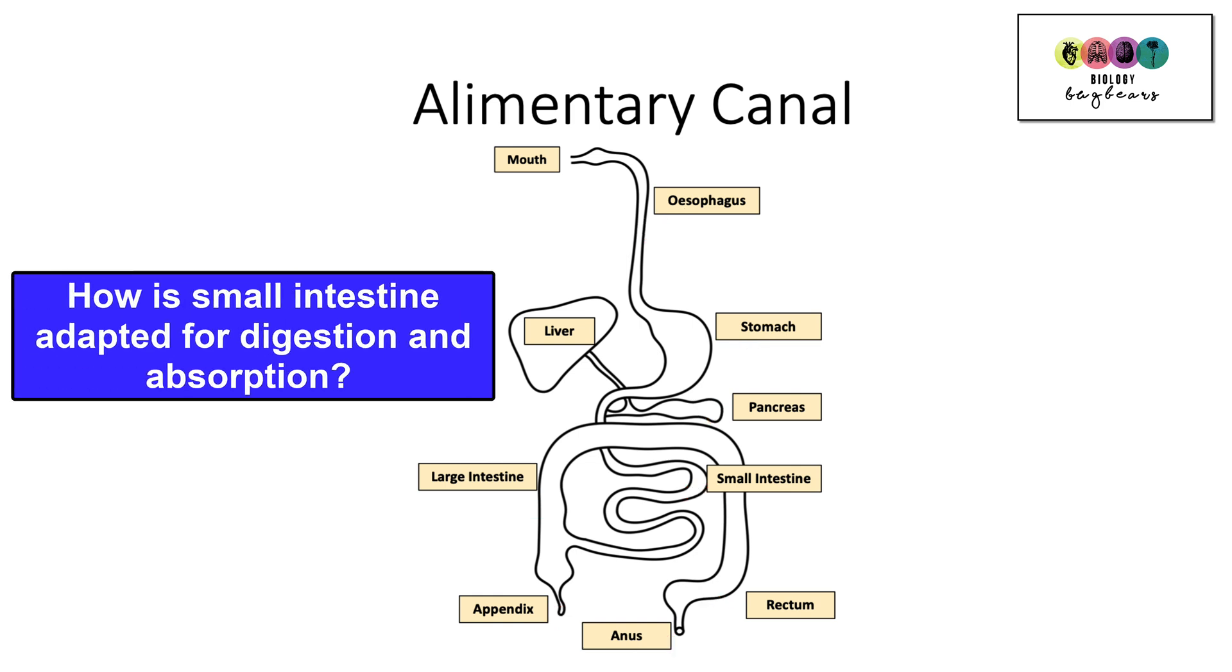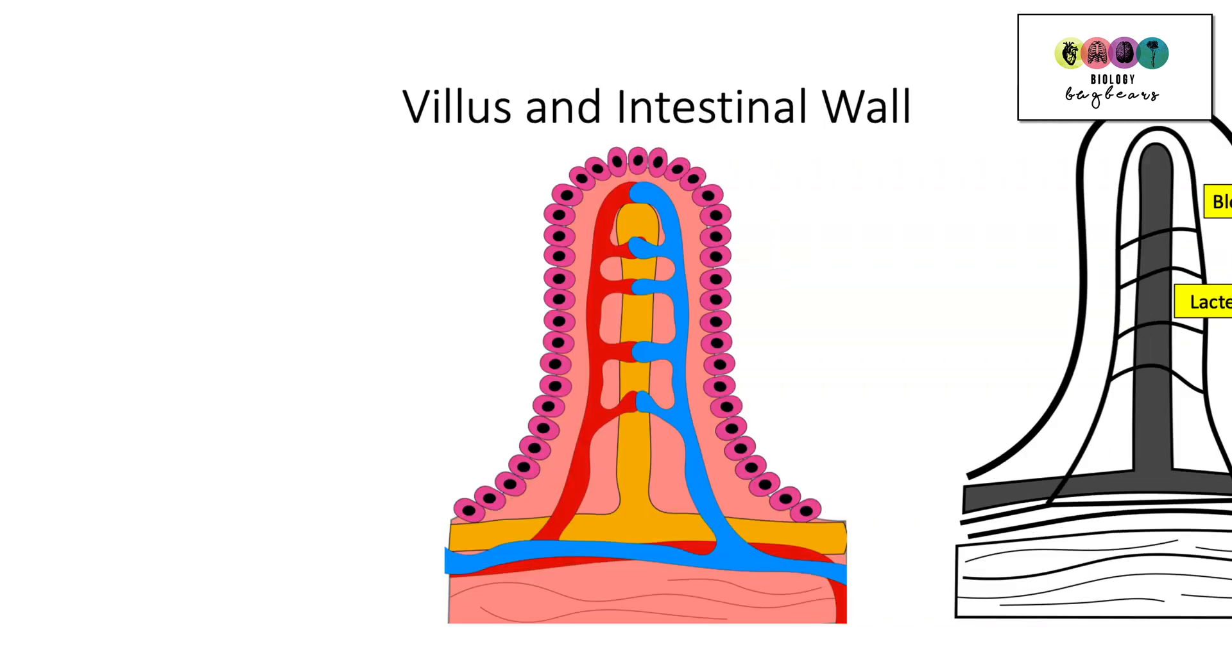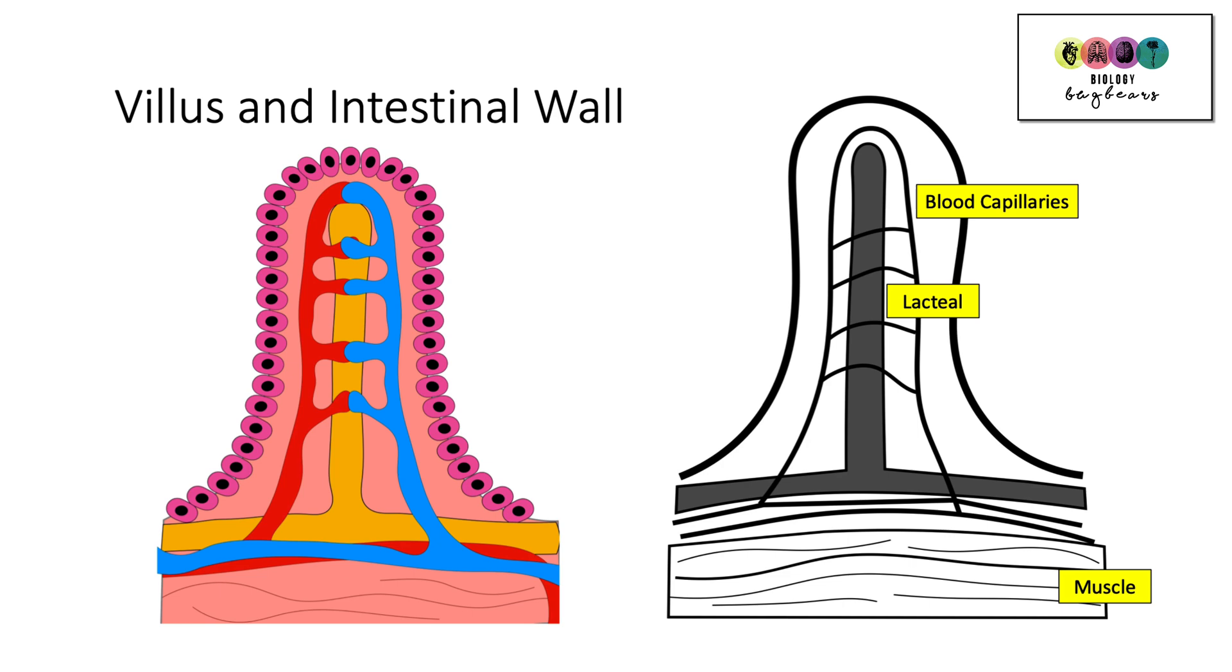How is the small intestine adapted to the roles of digestion and absorption? This is something that you could write a few bullet points on. So one of the features of the small intestine is that it's highly folded and it has millions and millions of these small structures called villi, which greatly increase the surface area for absorption. So it's very important that you can draw and label this diagram. It has come up quite a few times on the exams and it's important that you can put in the lacteal, the blood capillaries and label that muscle section of the intestinal wall.